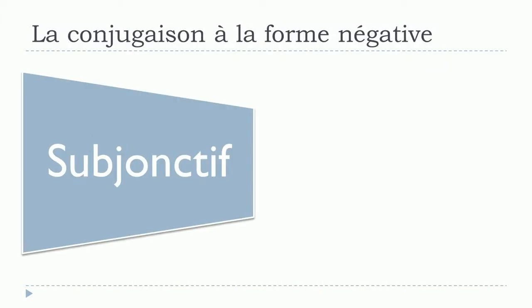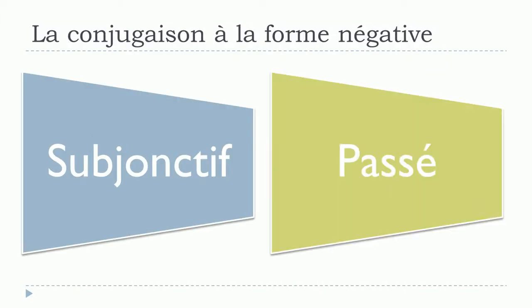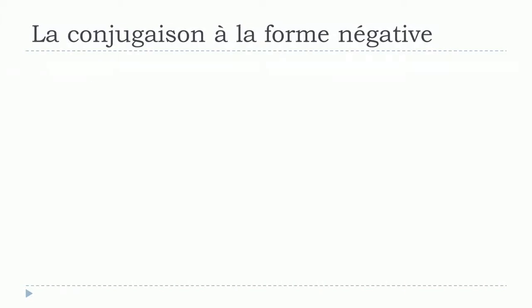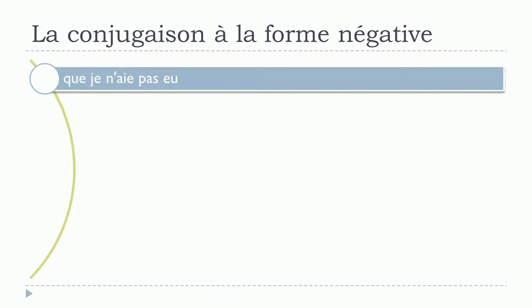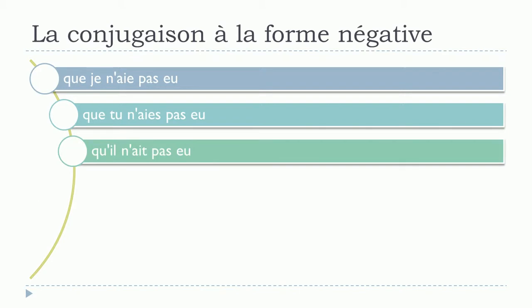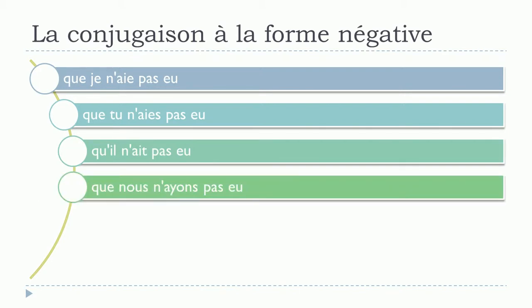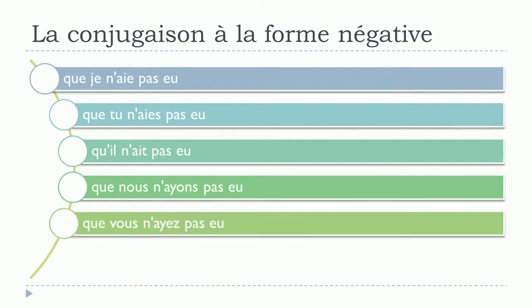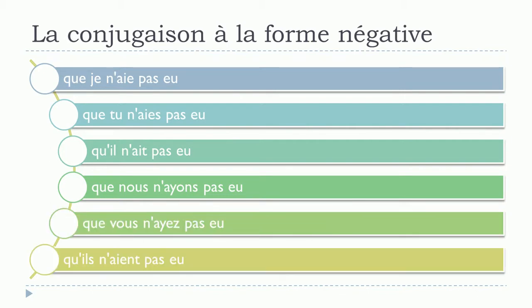And then subjonctif passé. Que je n'aie pas eu. Que tu n'aies pas eu. Qu'il n'ait pas eu. Que nous n'ayons pas eu. Que vous n'ayez pas eu. Qu'ils n'aient pas eu.